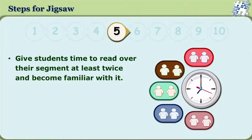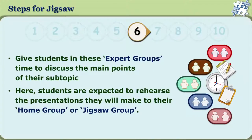In step five, the students are given time to read through their segment at least twice and become familiar with it. At this junction, the teacher can merge another cooperative learning strategy with Jigsaw strategy. For example, at step five, the teacher can use the think, pair, and share strategy in order to ensure students master the given subtopic. At step six, students in the expert groups are given time to discuss the main points of their topic, hence ensuring that the students rehearse and are thorough with what presentations they need to make in their home group.